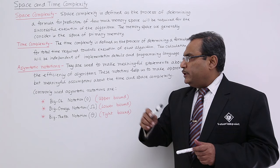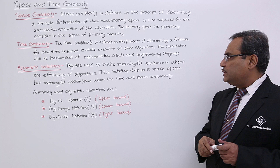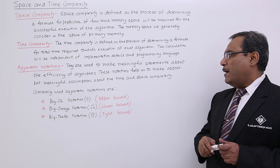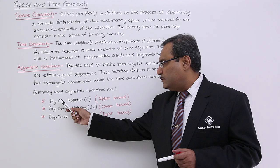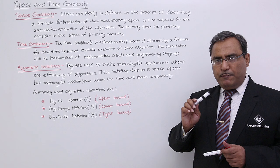Asymptotic notations are used to make meaningful statements about the efficiency of algorithms. These notations help us make approximate but meaningful assumptions about the time and space complexity. Here we have mainly 3 asymptotic notations. One is the Big O notation — that is known as the upper bound. That means the maximum time complexity which will be suffered by this program is denoted by the Big O notation.